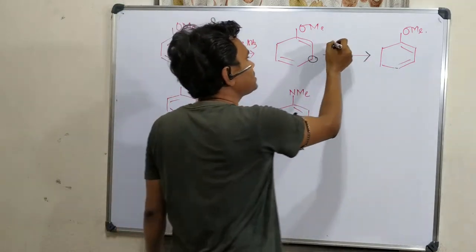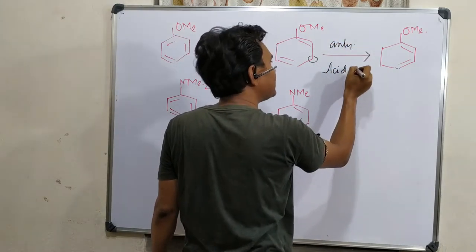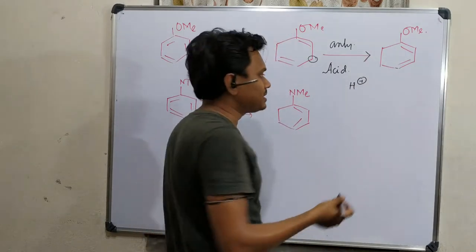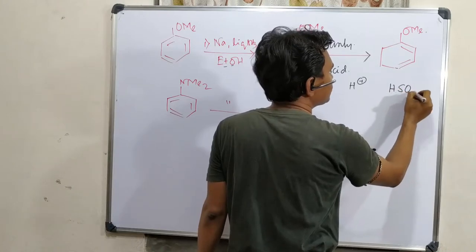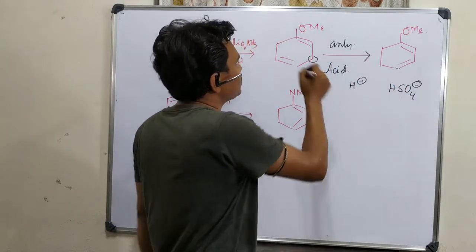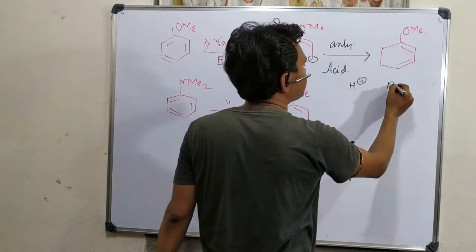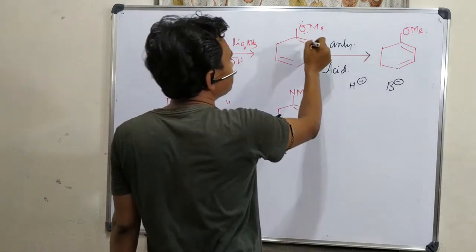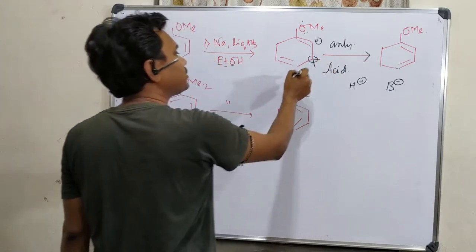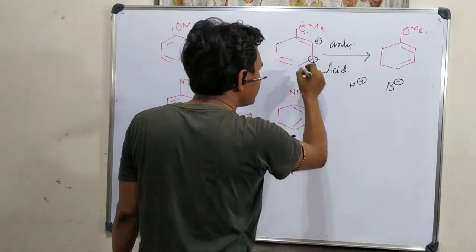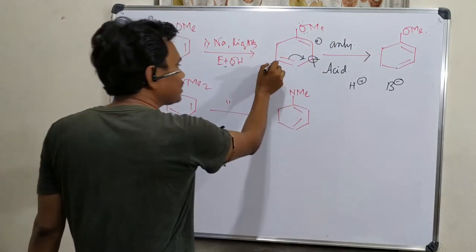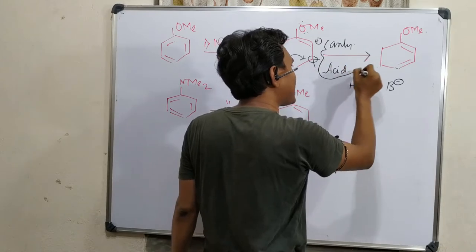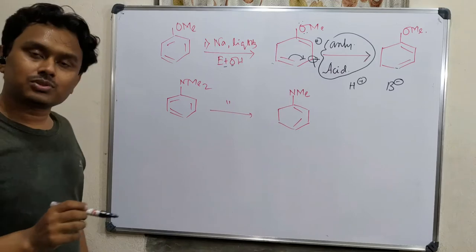As a workup, if the workup is done in the presence of anhydrous acid — which produces a proton and a non-nucleophilic, non-basic type conjugate base, for example HSO4-minus — then this proportion is getting protonated. If it is getting protonated, positive charge is generated, so this carbon — this proton — is abstracted, and consequently this double bond comes here. So protonation occurs and in this way this reaction happens. At the end step, in the presence of anhydrous acid, diene formation is possible.